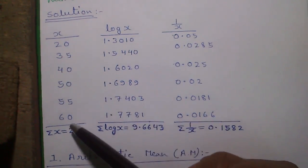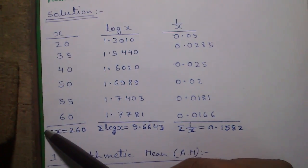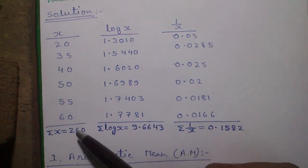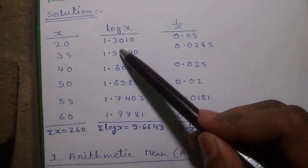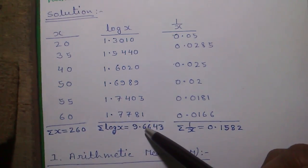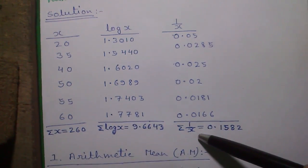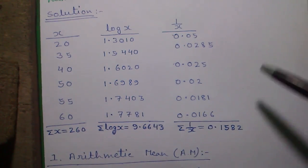Next, we will sum all x values. This is the symbol of sum or sigma symbol. So sum of x equals 260, sum of all log x values equals 9.6643, and sum of all 1 divided by x values equals 0.1582.